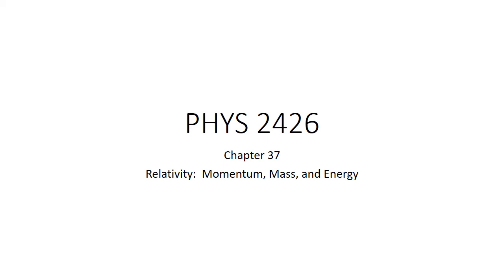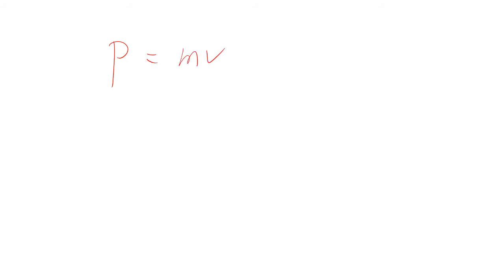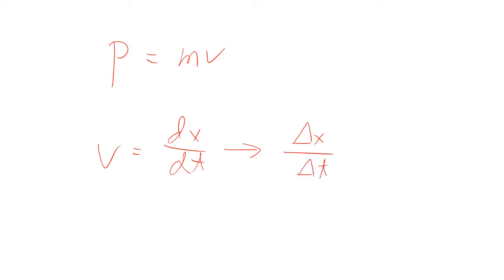When we're talking about relativity, we know that time and distance are altered by motion. What about momentum? We know that momentum is mass times velocity. Velocity is dx/dt, which we know from physics 1. Let's take average velocity: delta x over delta t.